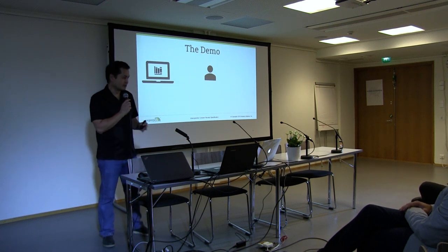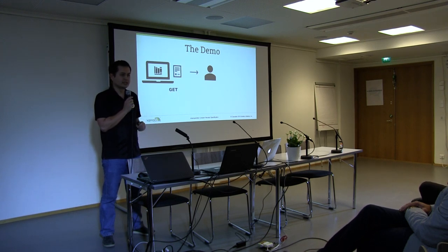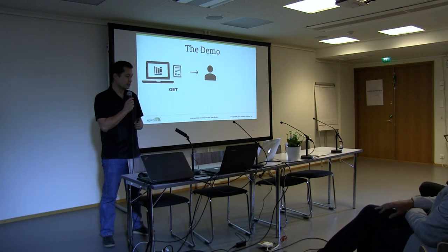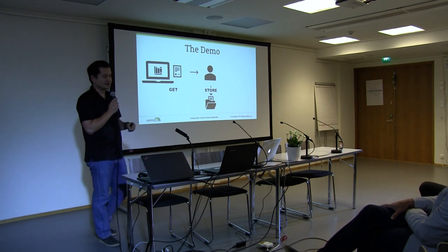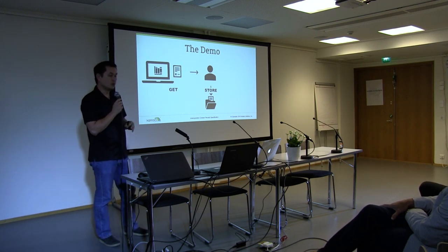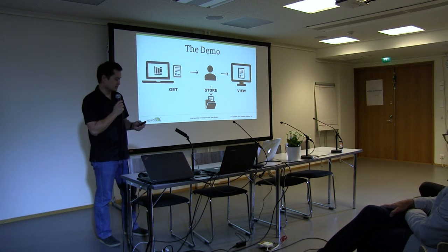Just to recap: we have our data subject wanting to check out and buy some books at the bookstore. They click OK to consent to whatever the purpose is at the bookstore, they get a consent receipt, and they store it wherever they want to — a personal data vault, or as you'll see in the demonstration, a downloads folder, or via an API to a platform. With different products, we'll take a look at what's actually in the consent receipt.